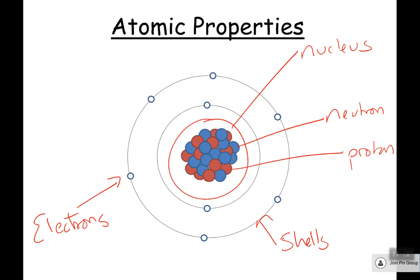These different particles have different properties. First is charge. The charge of a proton, or relative charge, is plus one. The charge of an electron is minus one, and the charge of a neutron is zero. A memory trick: proton — positive, neutron — neutral, and electron — negative.